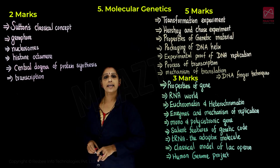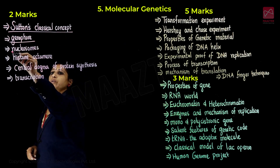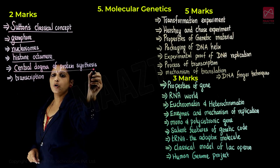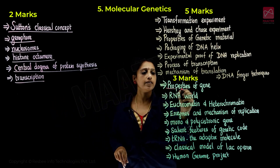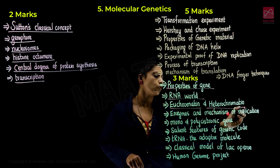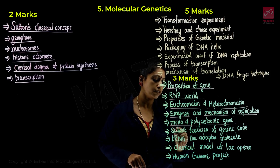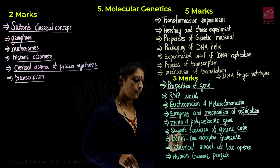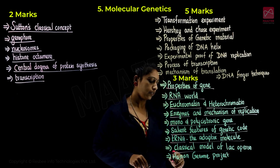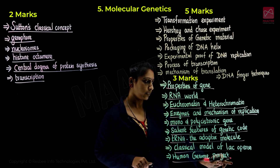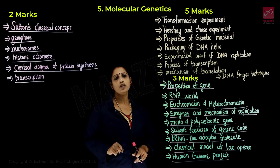Next and last chapter: Molecular Genetics. Two important questions include Sutton's classical concept, genophore, nucleosomes, histone octamer, central dogma of protein synthesis, and transcription. Three more questions cover properties of gene, RNA world, euchromatin and heterochromatin, enzymes and mechanism of replication, mono and polycistronic gene, and salient features of genetic code. Then tRNA as the adapter molecule, classical model of lac operon, and the Human Genome Project — its goals, methodology, and salient features — give three more questions.